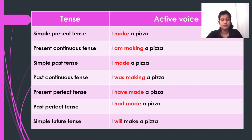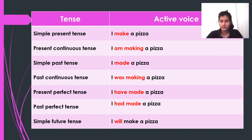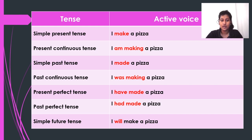Present perfect tense is used to indicate a link between the present and the past. The time of the action is before now but not specified, and we are often more interested in the result than the action itself. In present perfect tense: 'I have made a pizza.' We need to be careful as this can be a little confusing. Past perfect tense is used for talking about something that happened before something else in the past. So: 'I had made a pizza.'